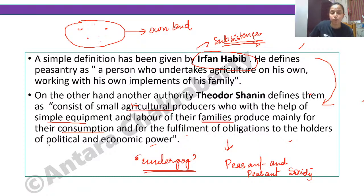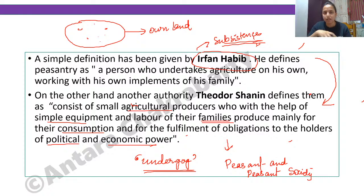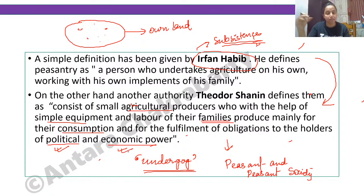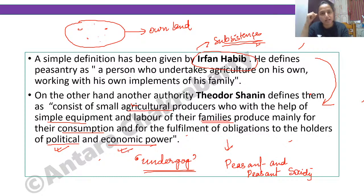Shanin also adds: production is for the fulfillment of obligations to holders of political and economic power. These definitions belong to times of feudalism transitioning to capitalism, which is why you see references to political and economic power above — like zamindars in India. Also remember: the concept of 'underdog' is by Theodore Shanin.